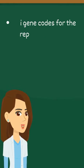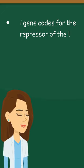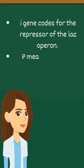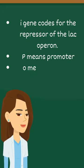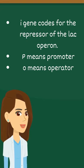The lac operon has an I gene, which codes for repressor mRNA. The P refers to the promoter region. O means the operator.